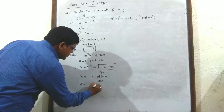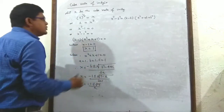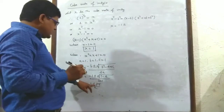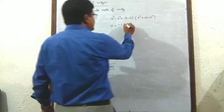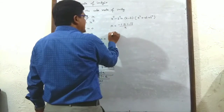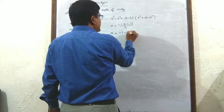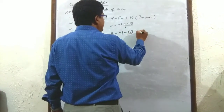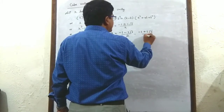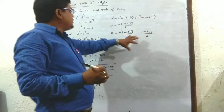x = (-1 ± √(-3)) / 2. Root of -3 can be written as i√3, so x = (-1 ± i√3) / 2. Thus, x = (-1 - i√3)/2 and x = (-1 + i√3)/2 are both cube roots of unity.